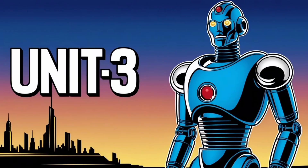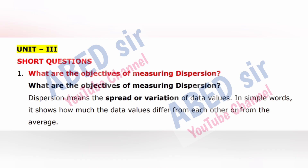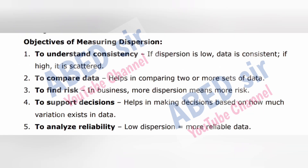Unit 3, first important short question: What are the objectives of measuring dispersion? Dispersion means the spread or variation of data values. In simple words, it shows how much the data values differ from each other or from the average. Objectives of measuring dispersion: